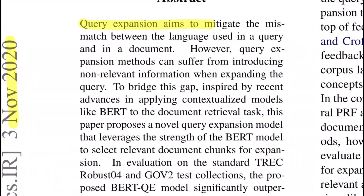Query expansion aims to mitigate the mismatch between the language used in the query and in the document. Query expansion is one of the common approaches used in information retrieval where the task is to improve the hit rate of fetching any document from the database for a given query. Query expansion can help in augmenting the given query with relevant keywords for achieving better performance. This paper talks about using BERT, a contextualized model, for extracting and ranking relevant chunks from documents as possible augmentations for the query, then selecting documents based on new retrieval scores.